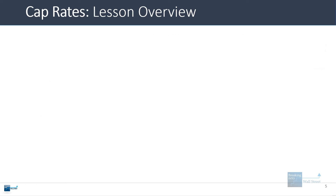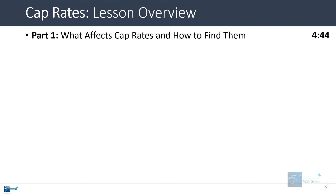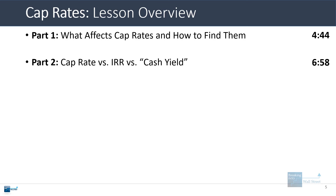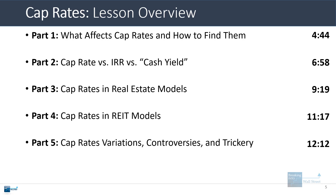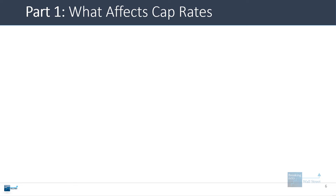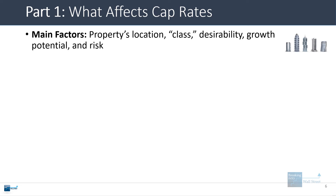Let's go into more detail on a few of these points. First, what affects cap rates and how you can find them; then the cap rate versus the IRR versus the cash yield; how you use cap rates in real estate financial models; how they come up in REIT models; and some variations, controversies, and trickier parts of the calculation. The short answer is that the factors affecting cap rates are pretty much the same ones that affect EBITDA multiples or any other valuation multiple for normal companies.